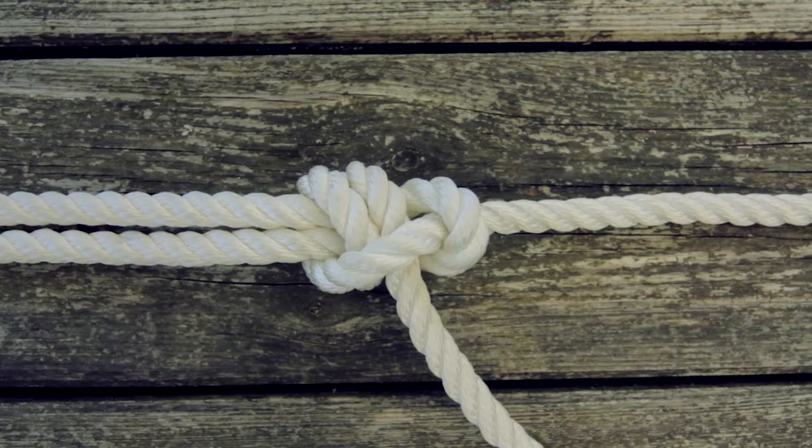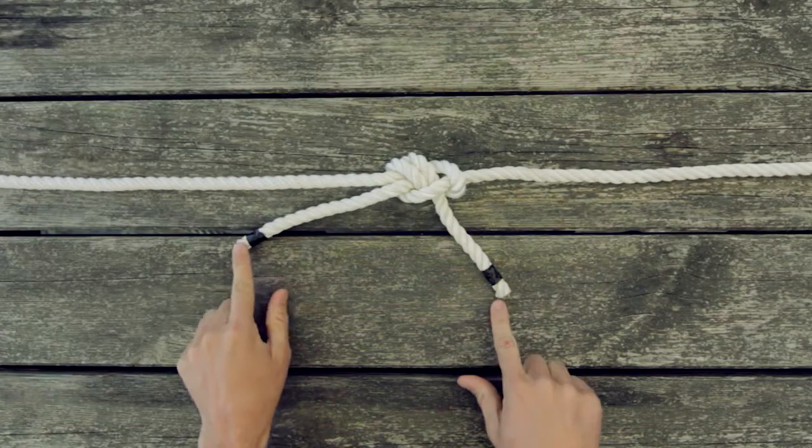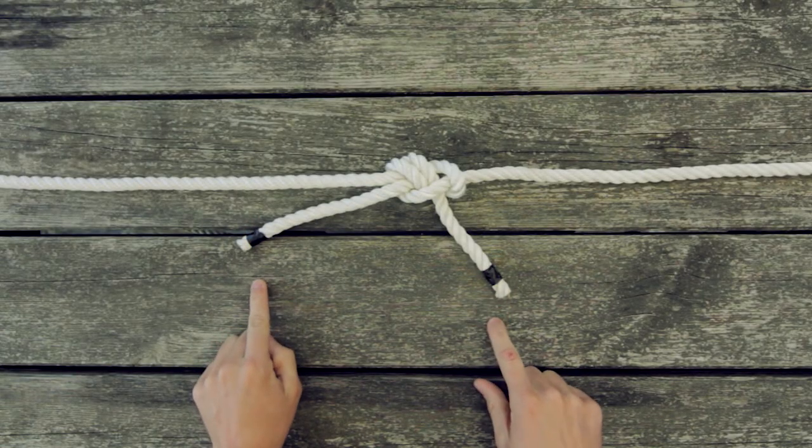The sheet bend is especially good for attaching two lengths of rope of different thicknesses together. To make sure it's tied properly check that both tail ends are facing the same way.